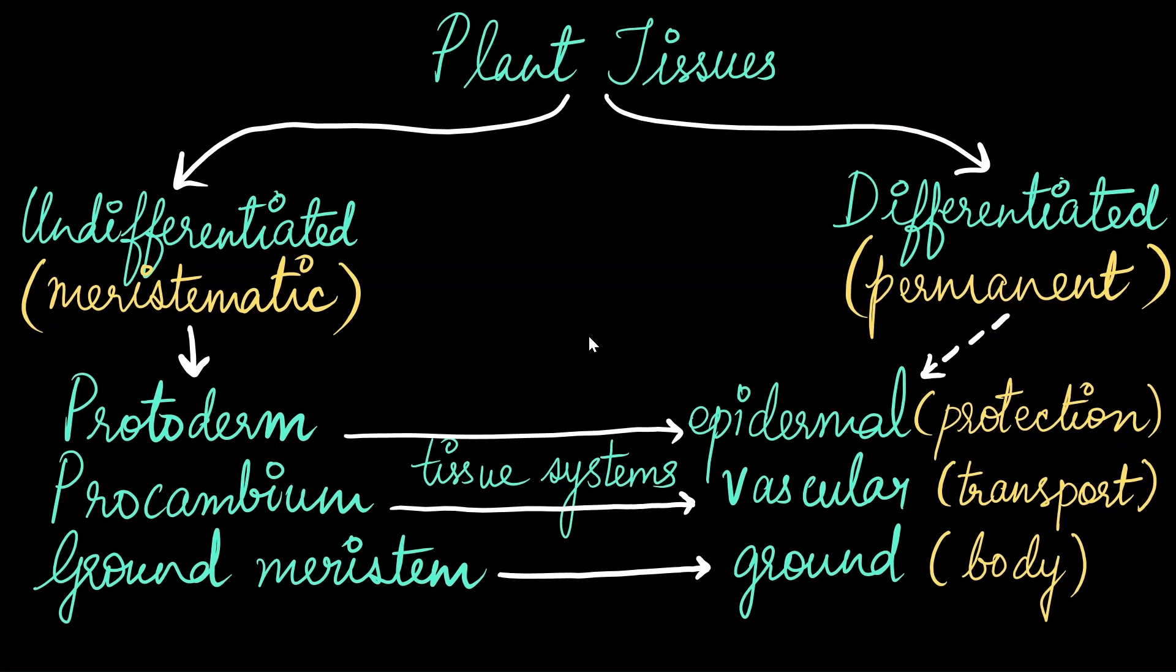In a previous video, we looked at the different types of tissues in plants. So to start with, plants have undifferentiated tissue called meristematic tissue. These are the stem cells. They do not have any function. The process by which these meristematic cells obtain specific function is called differentiation. Once they specialize, these cells are called differentiated or permanent cells.